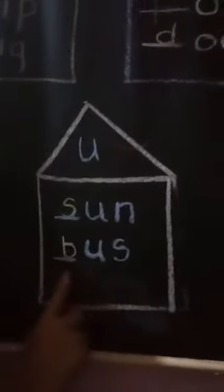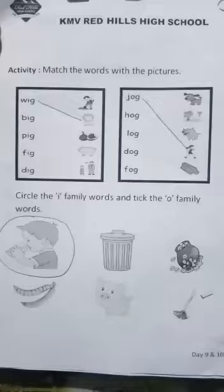Same way, in U family words, when I added S, the word became completed. S, U, N — sun. B, U, S — bus.